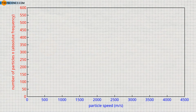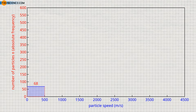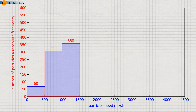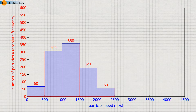A gas usually contains innumerable particles. To better illustrate the speed distribution, we will assume a number of 1,000 gas molecules, with speed intervals of 500 meters per second each. The following statistical distribution could typically result: 68 particles in the range 0–500 m/s; 309 particles in 500–1,000 m/s; 358 particles in 1,000–1,500 m/s; 195 particles in 1,500–2,000 m/s; 59 particles in 2,000–2,500 m/s; 10 particles in 2,500–3,000 m/s; and 1 particle with a speed greater than 3,000 meters per second.